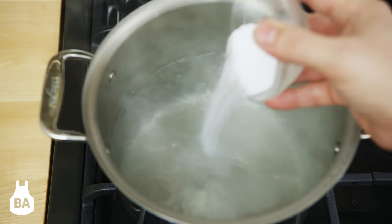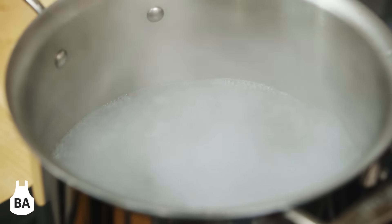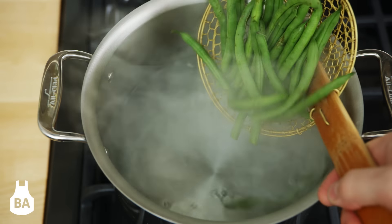Secondly, we need to properly salt the water. We season it with salt so it tastes almost like the ocean. This will help to season your vegetables as they cook.